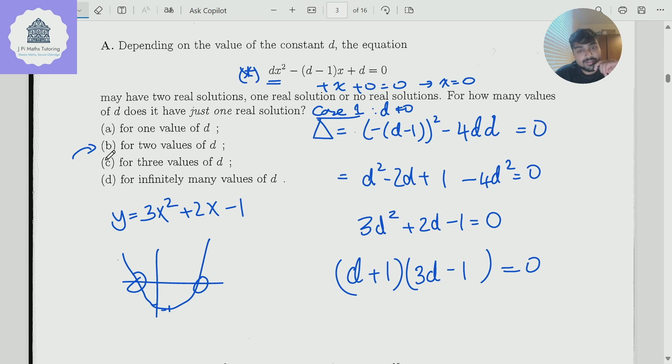And so therefore, the answer is actually c. What's the moral of the story here? Do not just use the discriminant. You have to check if it is genuinely a quadratic. This catches out so many people.